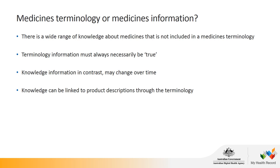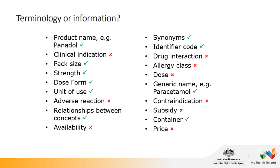The Australian substance hierarchy contains base medicinal substances such as paracetamol, and modifications to these bases such as the salt candesartan selexetil, and hydration status such as codeine phosphate hemihydrate. It is important to clarify the distinction between medicines terminology and medicines information. The terminology contains information that must always be true about the medicine — a defining characteristic — whereas knowledge can change over time. Things like product name, pack size, strength, dose form and unit of use are always part of the terminology, whereas clinical indication, adverse reactions, drug interactions or dose can change over time and are not contained within the terminology.